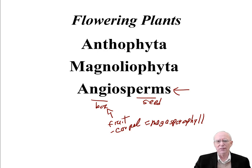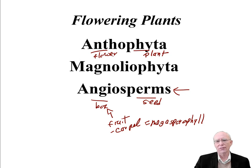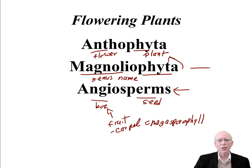Other names relatively in common use are the Anthophyta — phyta means plant, and antho means flower, so literally it's the flowering plants. Magnoliophyta has the same suffix ending, and magnolia is a genus name. This name for the flowering plants, the Magnoliophyta, is suggested by the International Code of Nomenclature, but it's not required, and so very few people use it.